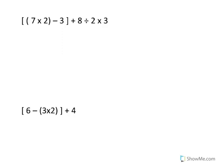Let's do this one first, which starts with seven times two. Right here, notice these are brackets — they are considered parentheses — and you're always going to do this type of parentheses first, then do the outside brackets. So let's go ahead and write our 'Please Excuse My Dear Aunt Sally.' What are we going to do first? We're going to do the parentheses.